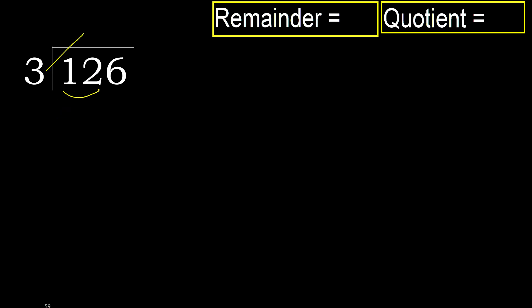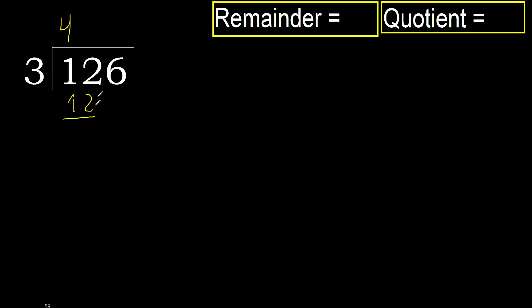3 multiplied by which number is nearest to 12 but not greater? 3 multiplied by 5 is 15, which is greater. 3 multiplied by 4 is 12, which is not greater. Subtract — 0. Next.